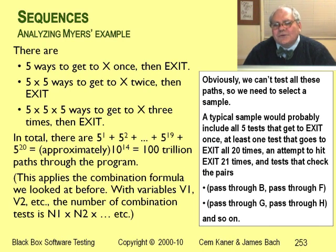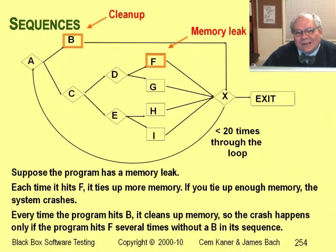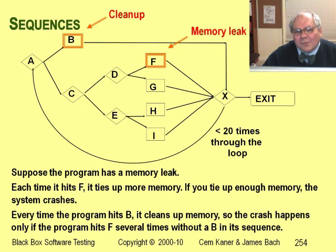Imagine the number of paths through a word processor or a telephone system. Obviously you can't test all these paths. Some people would test only six paths: try each of the five ways to get from A to X, then add a case that gets to X 20 times and exits automatically. That covers every line, every branch, and every simple sub-path through the program. But is it enough testing? Imagine what would happen if we had a memory leak at F — if we go through F 10 times, the program crashes out of memory. Unless we're testing with a memory meter, we're not going to notice that bug unless we pass through F 10 times.